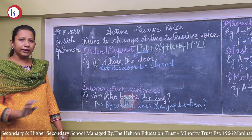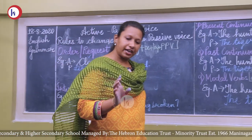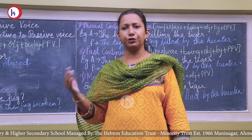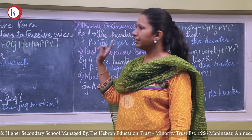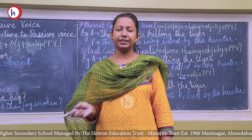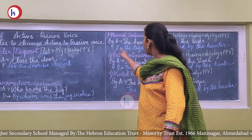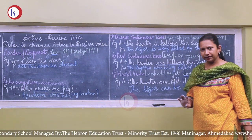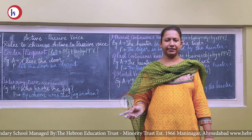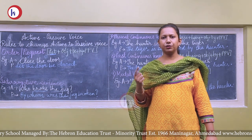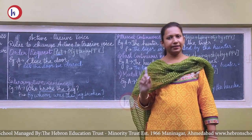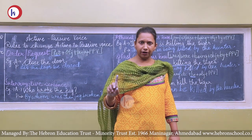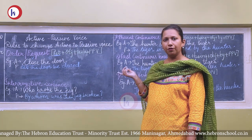Following these rules, you can change any given sentence from active to passive voice and passive to active voice. Concentrate on the subject, object, and verb — specifically the forms of the verb and the syntax given for each tense. Only sentences with transitive verbs can be changed into passive voice.